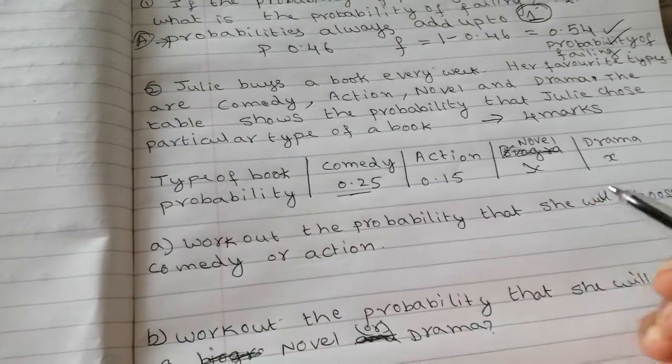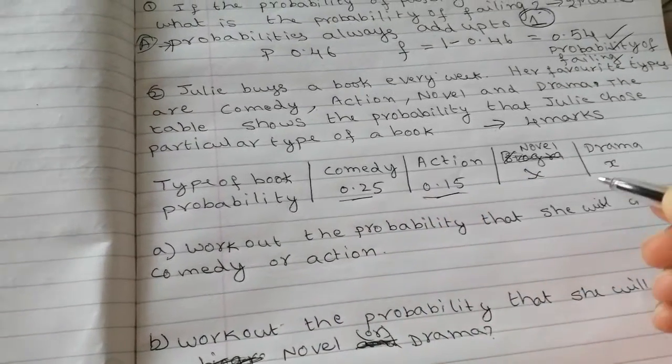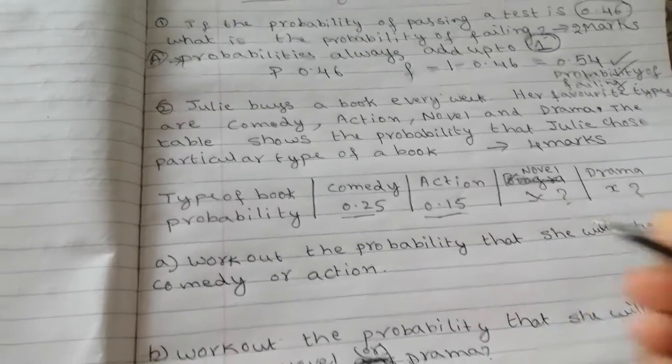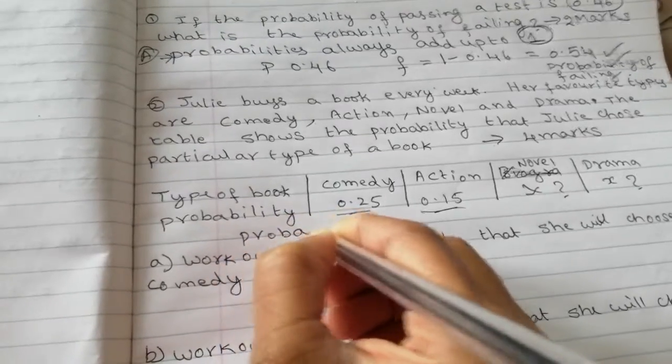So comedy is 0.25, action is 0.15, novel we don't know, drama we don't know. And we know the golden rule is probability always add up to 1.